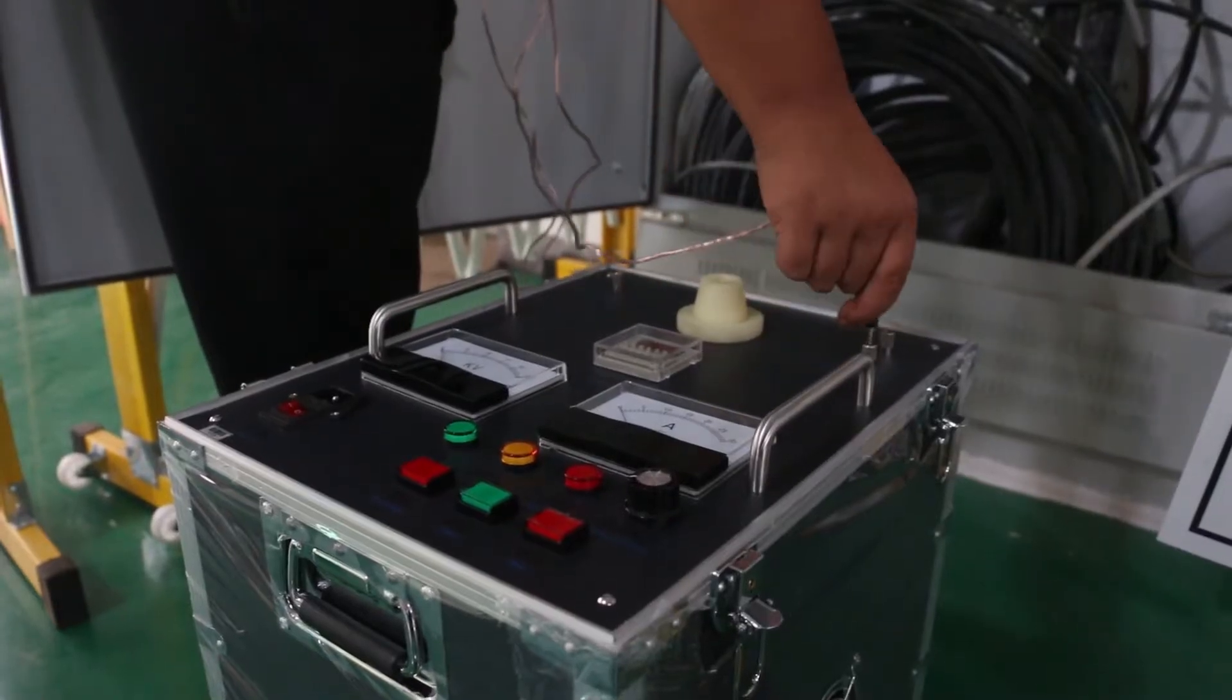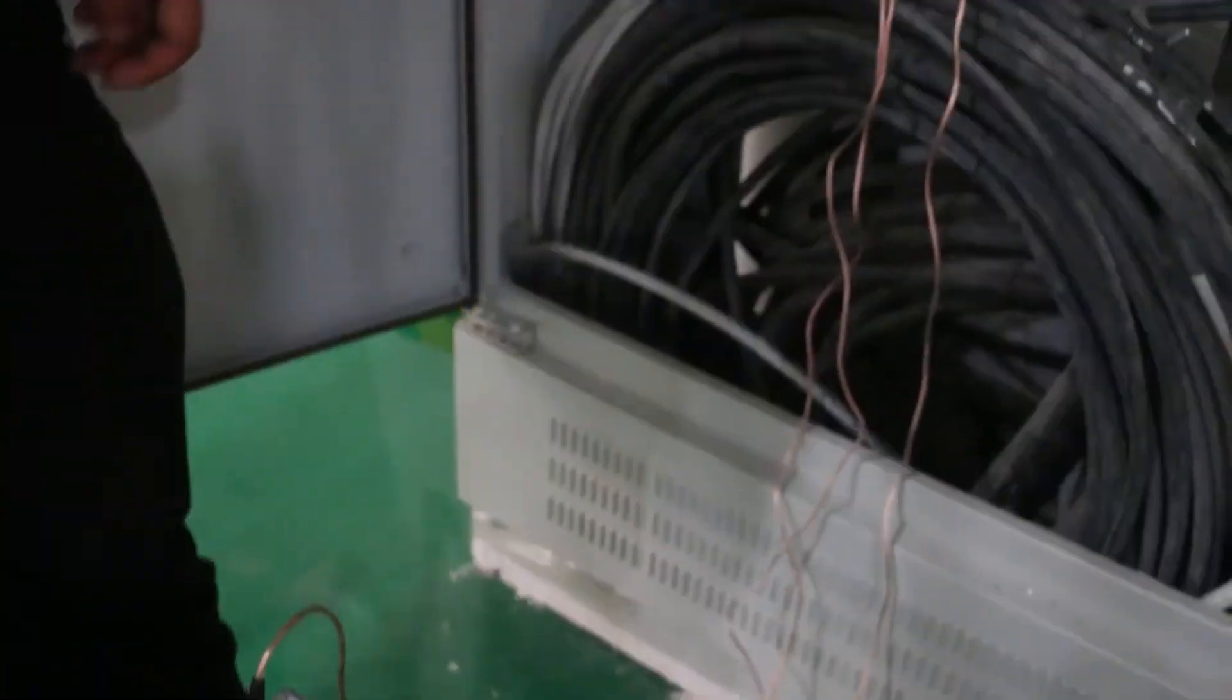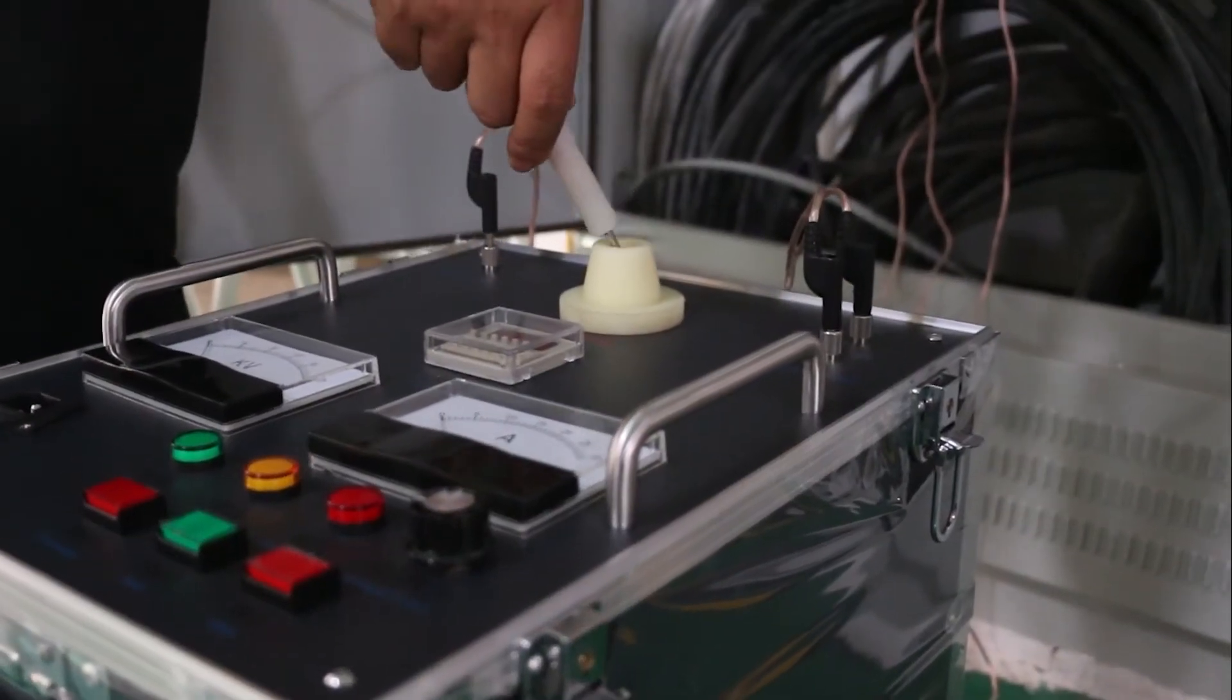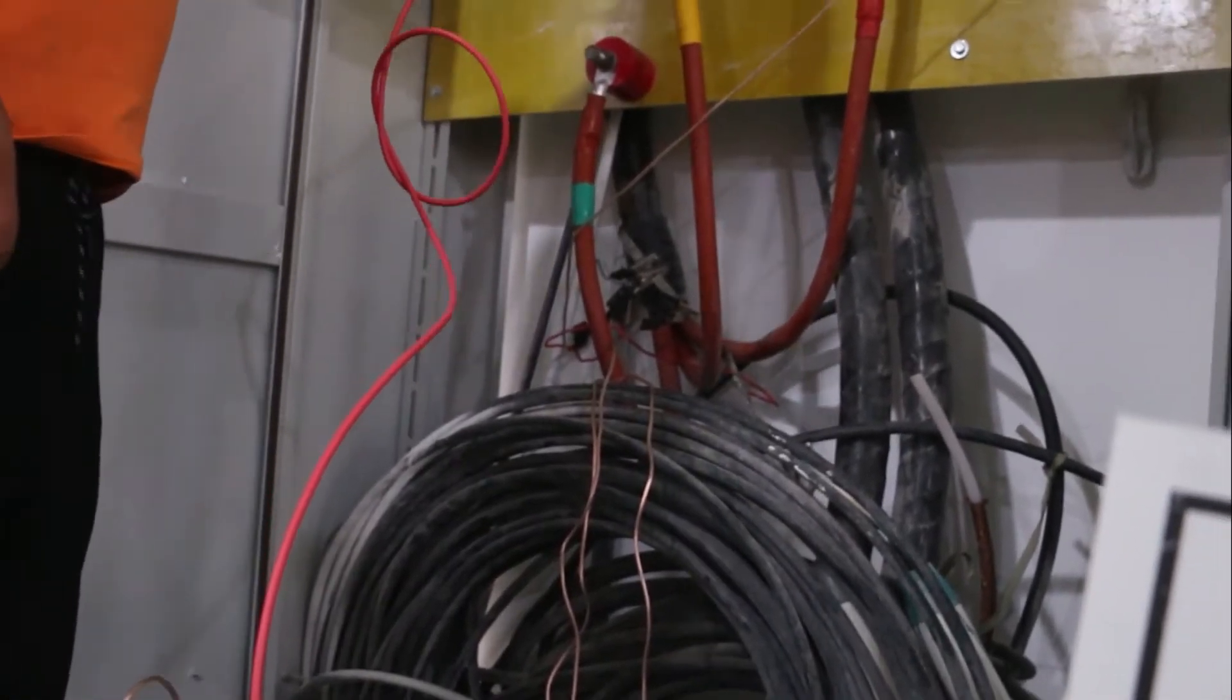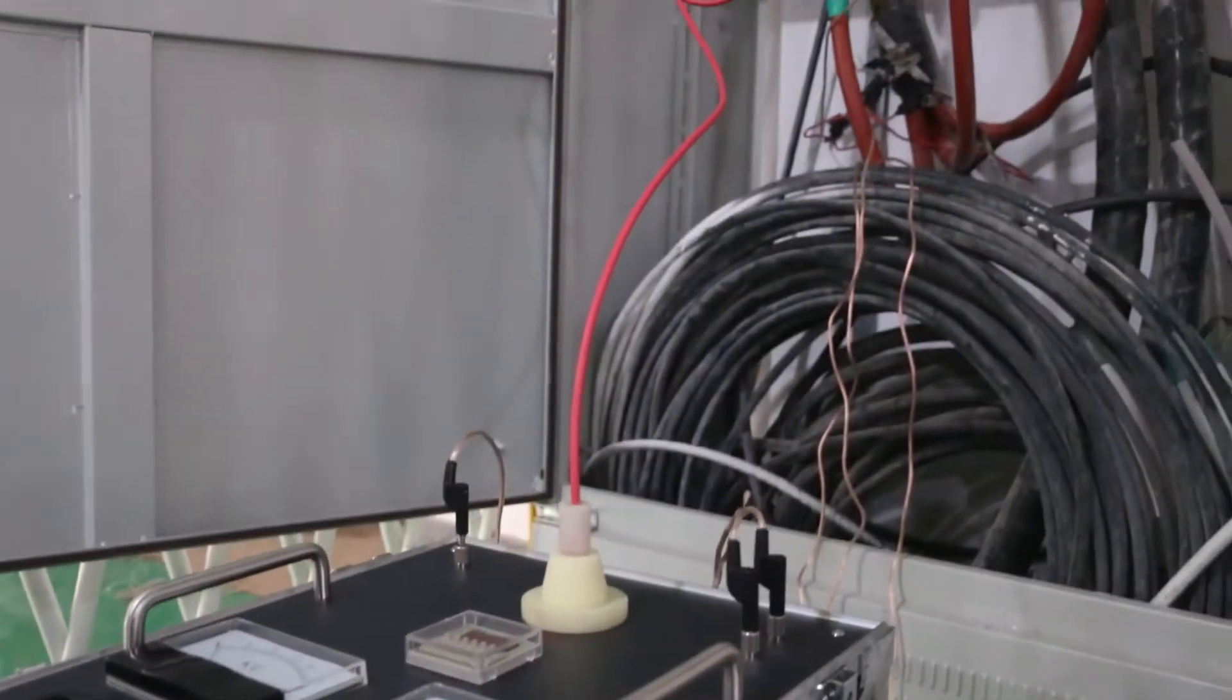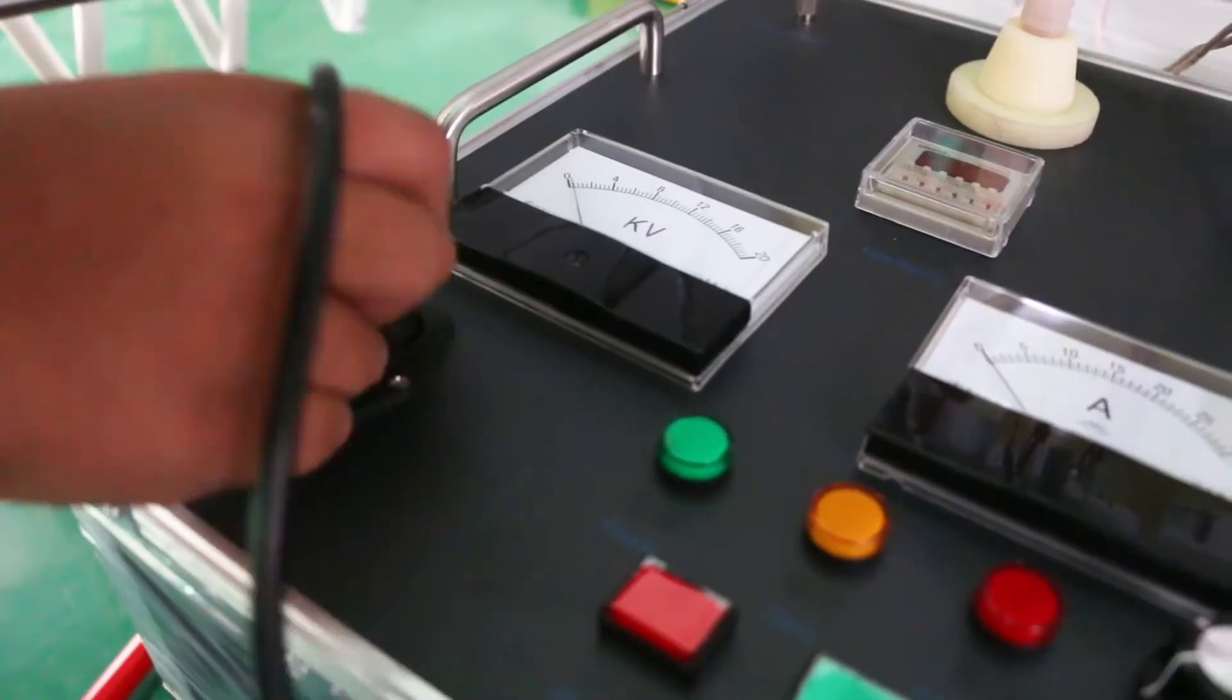First, connect high-voltage ground, sampling ground, and safety ground to earth well. Note that sampling ground must be connected to copper tape of cable. High-voltage output test lead connects with core of cable. Discharging rod should connect to earth well.